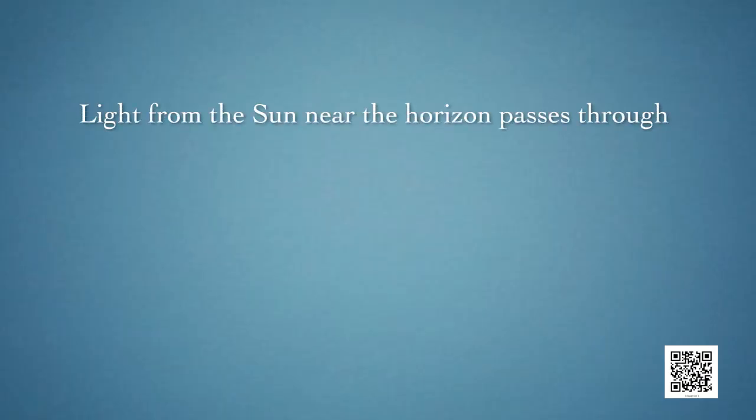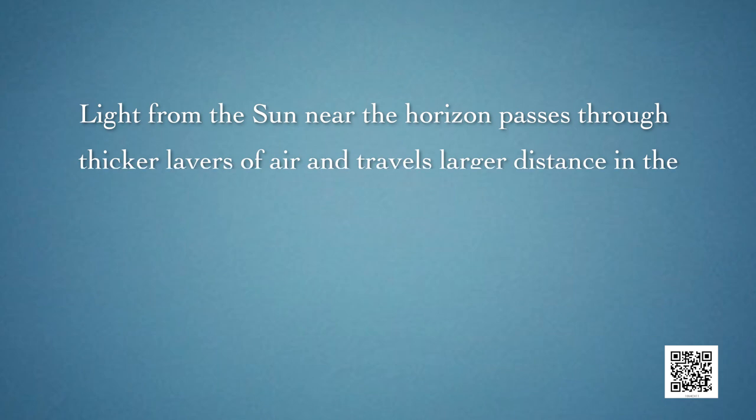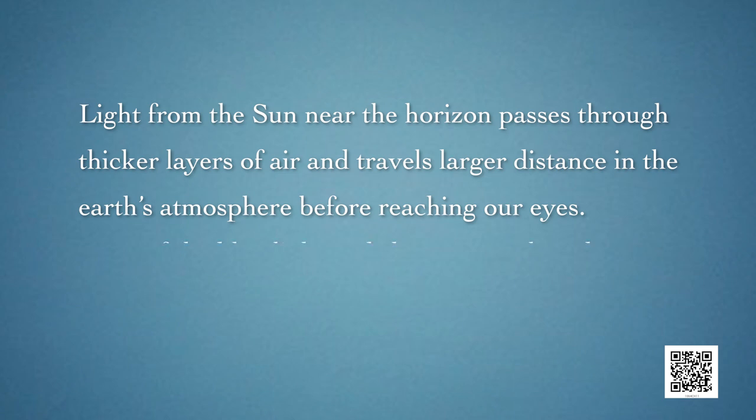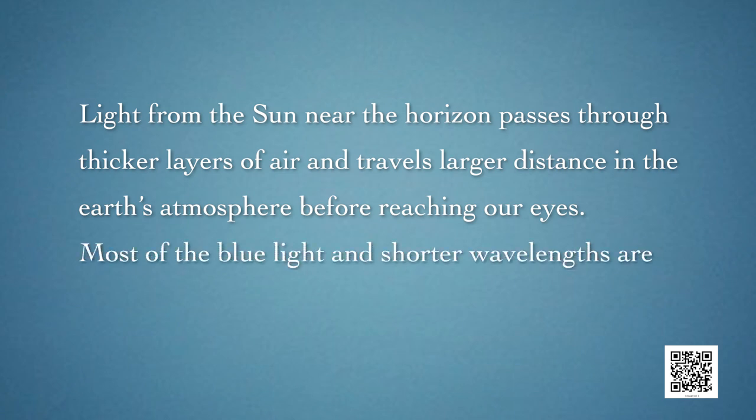Light from the sun near the horizon passes through thicker layers of air and travels a larger distance in the earth's atmosphere before reaching our eyes. Most of the blue light — which is of shorter wavelength — is scattered away by the particles. Therefore, the light that reaches our eyes is of longer wavelengths, giving rise to the reddish appearance of sunlight. But light of the sun overhead travels a relatively shorter distance, so at noon the sun appears white as only a little of the blue and violet colours are scattered.